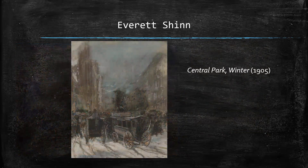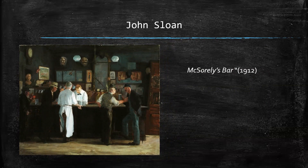Here we have a very impressionistic style from Everett Shinn called Central Park Winter from 1905. Once again, we have that dark, gritty, impressionistic feeling — the outlines of the buildings in the background aren't even clearly defined, but it gives you the feel of what it would be like to be in Central Park in the winter. This is one of the more famous ones from the Ashcan movement — McSorley's Bar from 1912 — a lower-class bar with lower-class individuals probably having a drink after work, a scene intended to be true to real life.